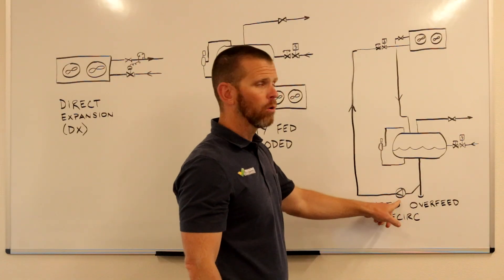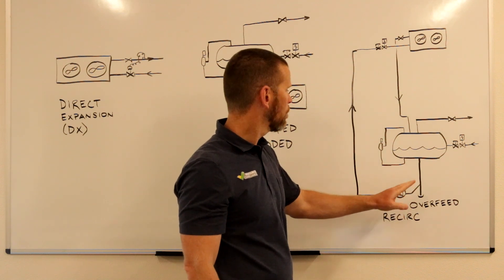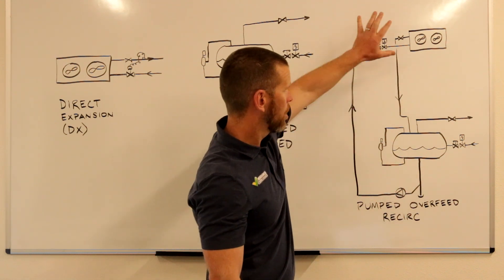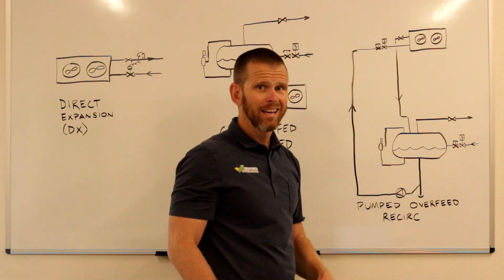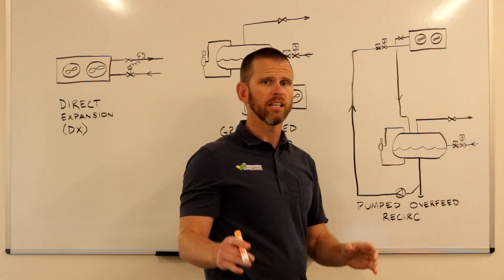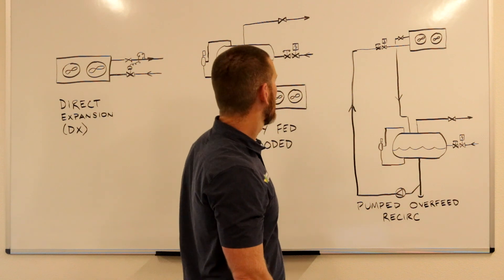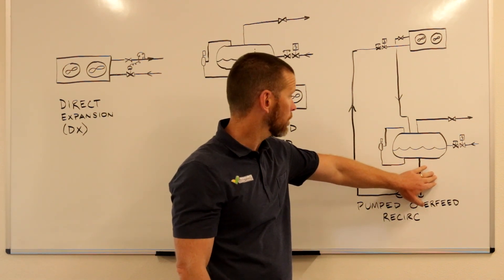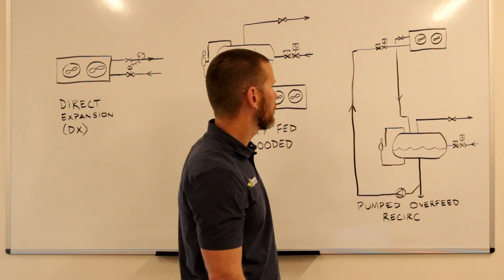instead now we will employ a pump that will move our low pressure liquid to the evaporator, which I've shown above the vessel in this case. And that evaporator can be a long distance away from where the pump is and the recirculator is for this pumped overfeed system.